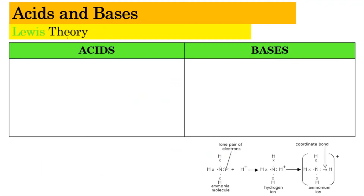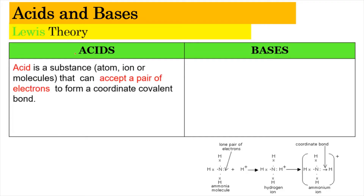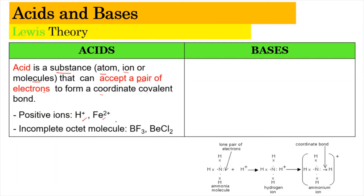Now we're going to look into the Lewis Theory. According to Lewis, an acid is a substance — which can be an atom, ion, or molecule — that can accept a pair of electrons in order to form a coordinate covalent bond. Examples include positive ions such as H⁺ or Fe²⁺, or incomplete octet molecules such as BF₃ and BeCl₂.